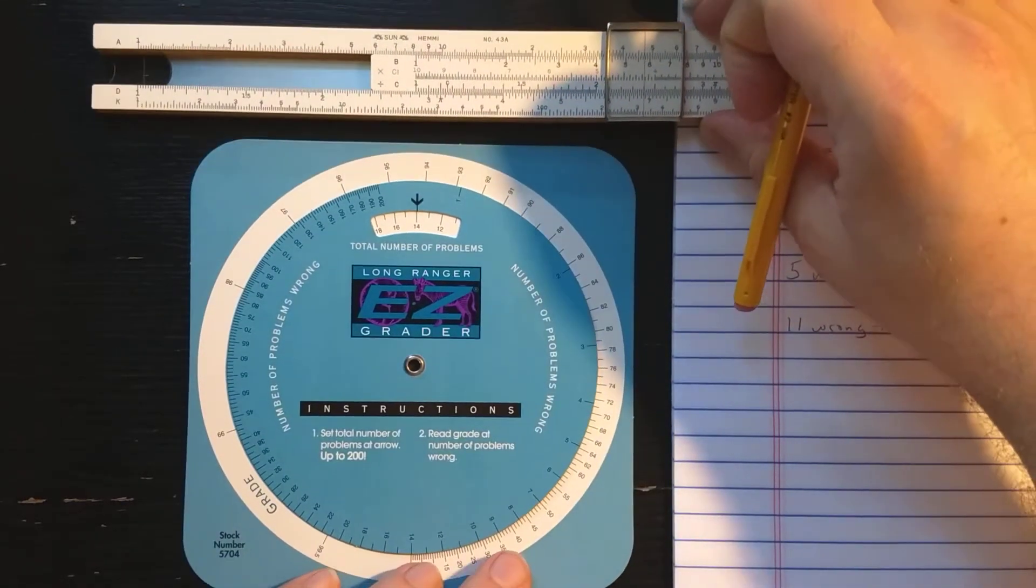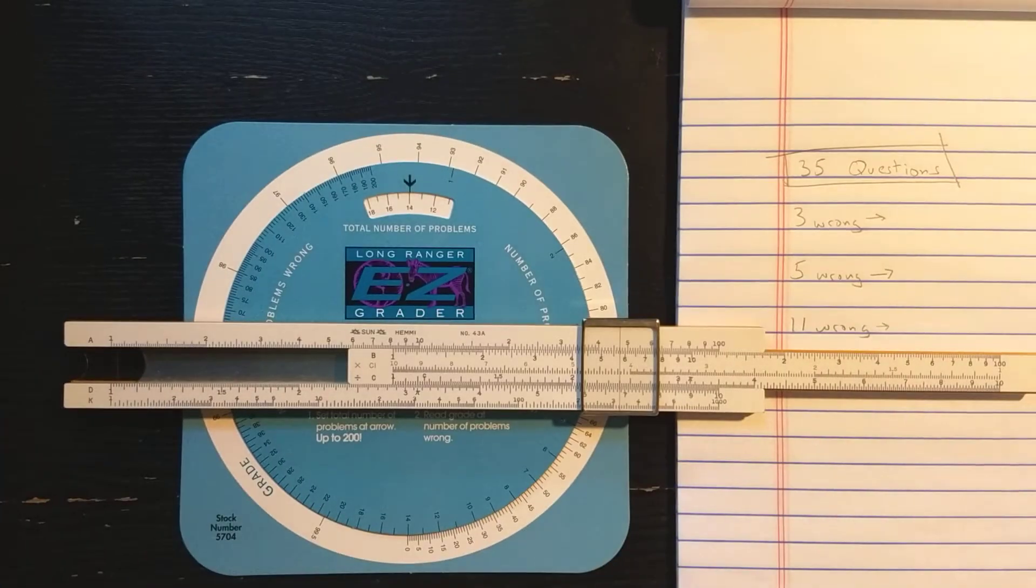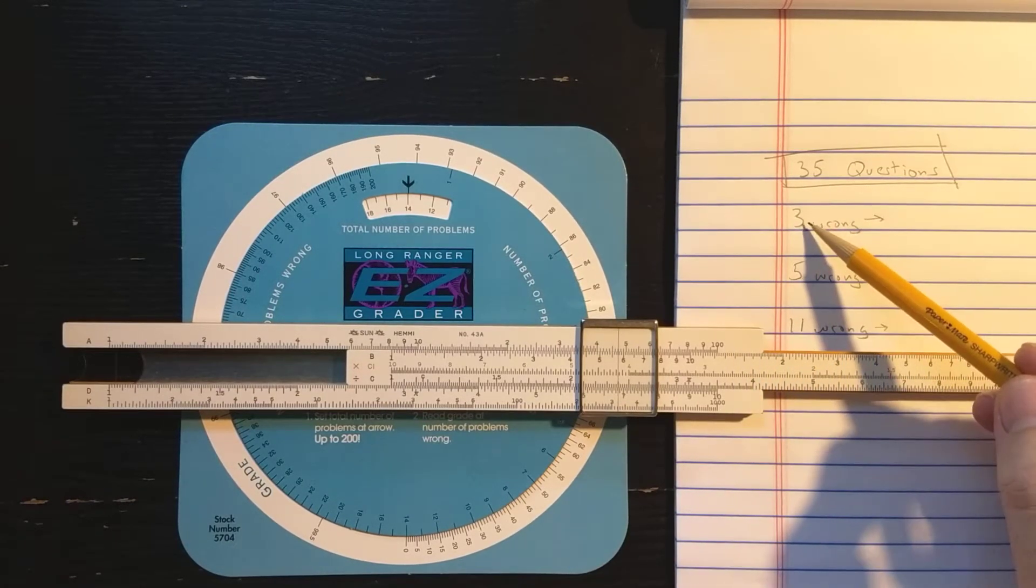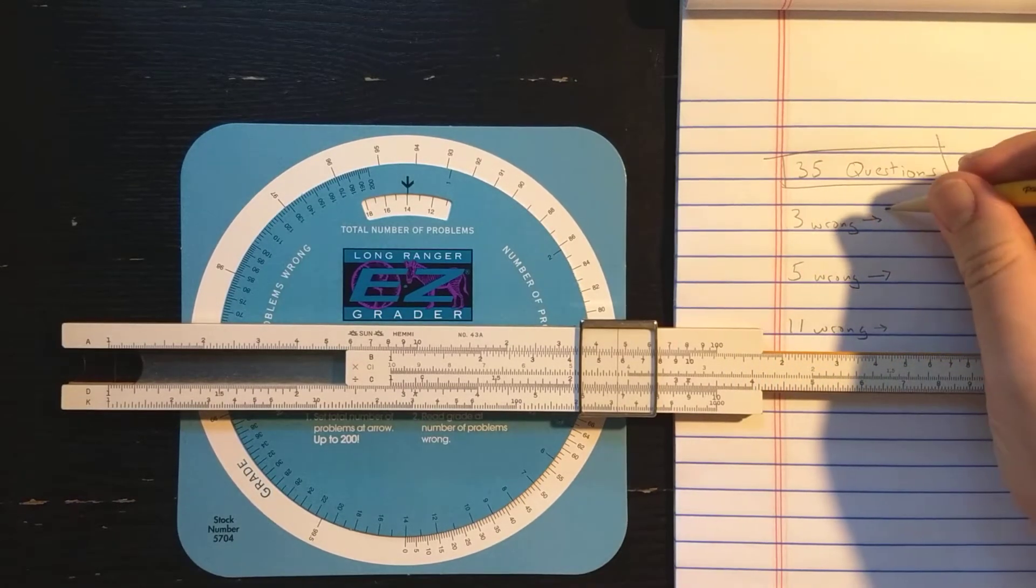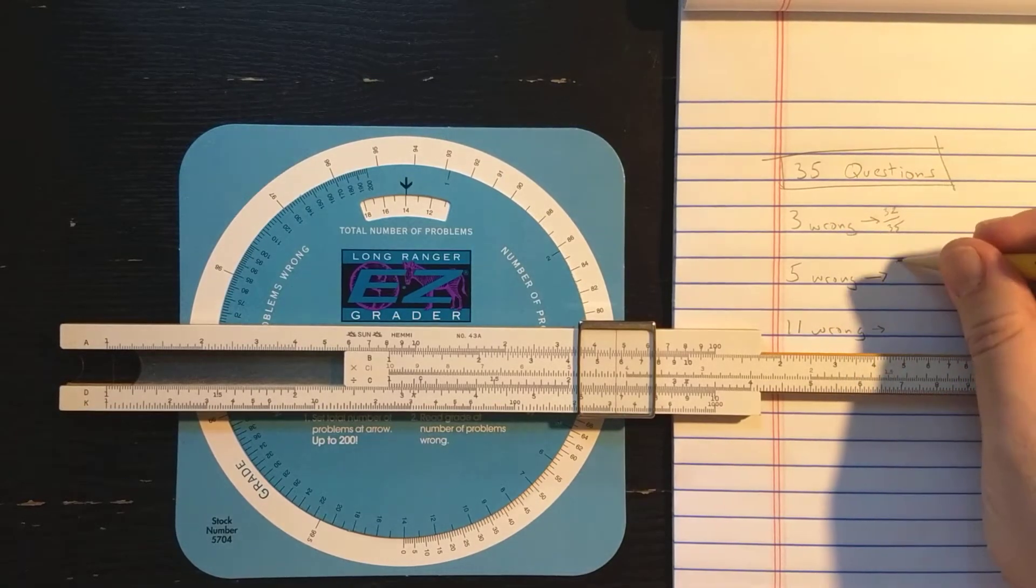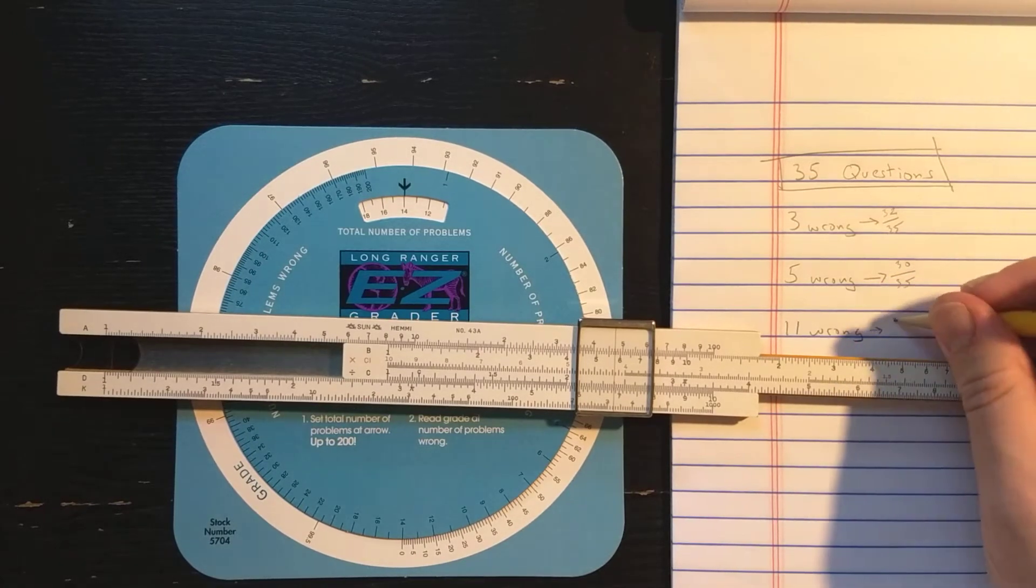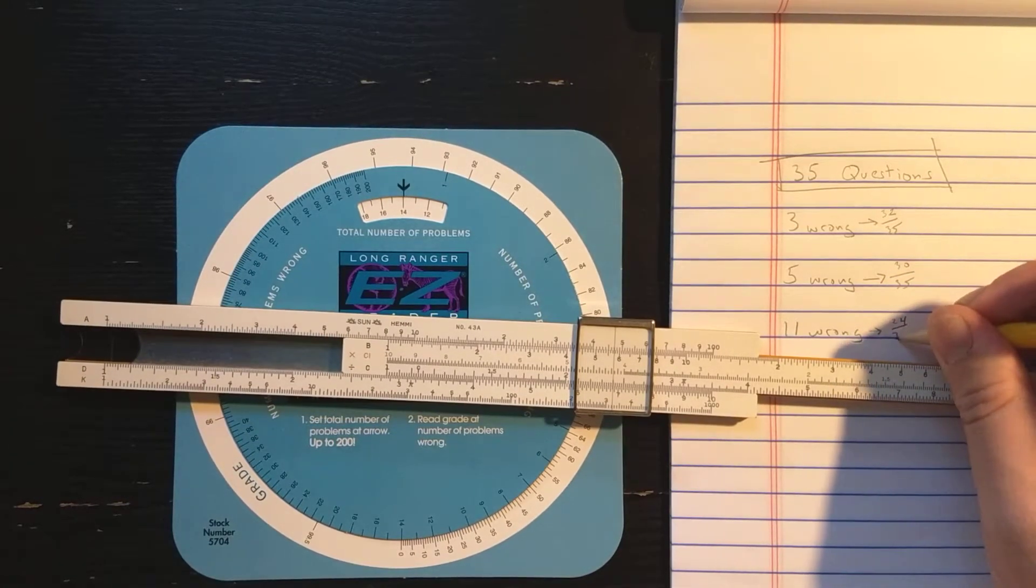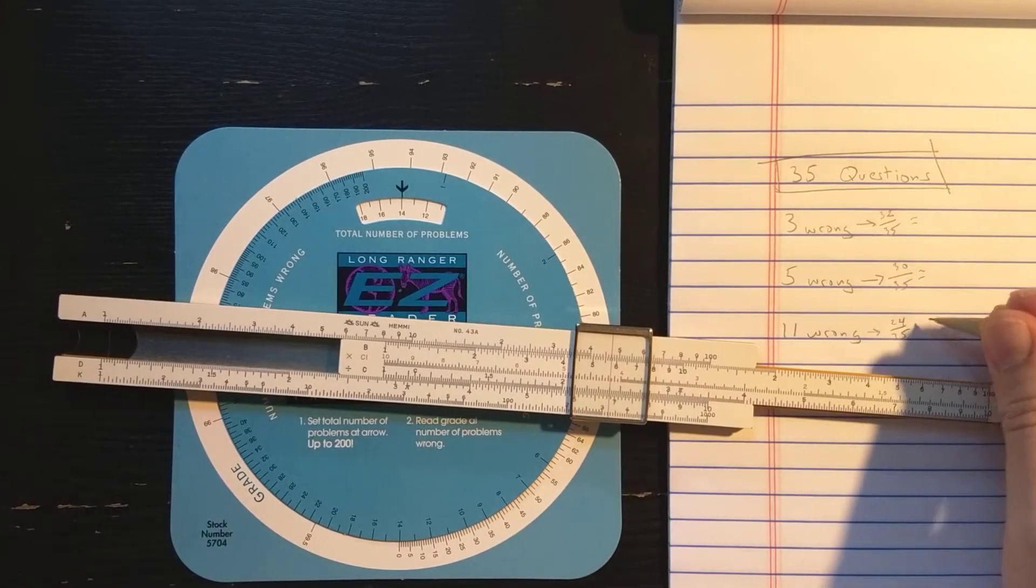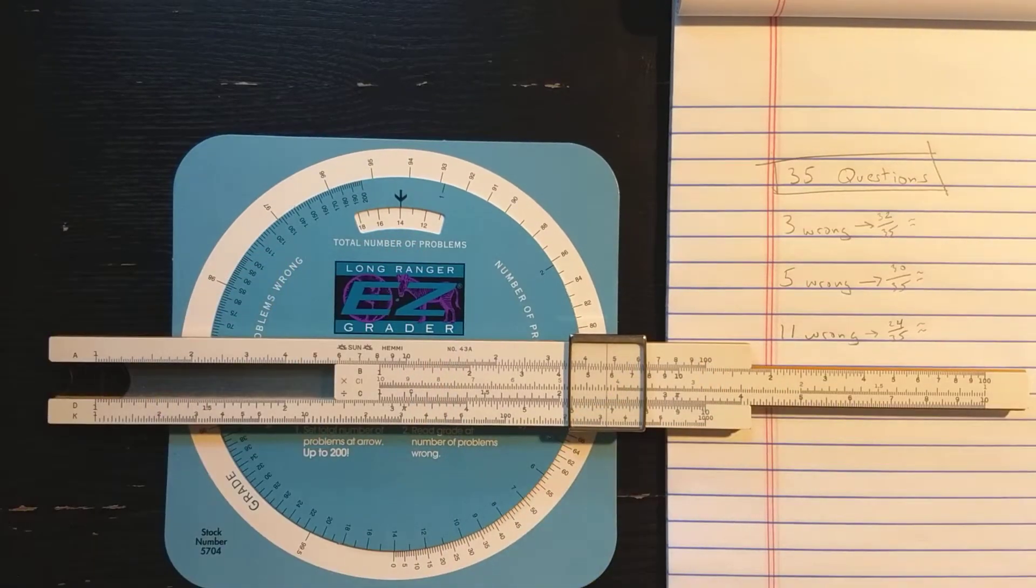The way I'd probably do this on the regular slide roll is, well, I'd have to compute how many they got correct. So here I have 32 correct out of 35, here I have 30 correct out of 35, here I have only 24 correct out of 35. And I would just convert all those to a percentage. I'd probably round the student's grade up to the nearest percent.